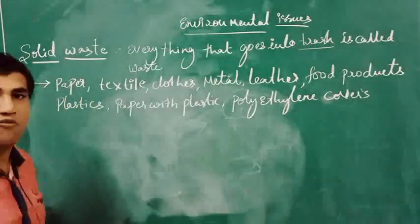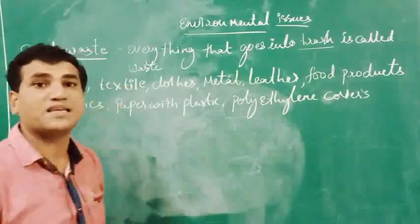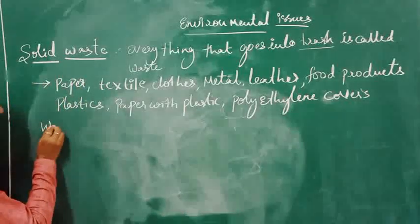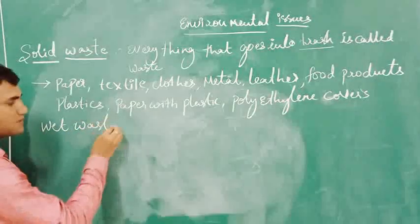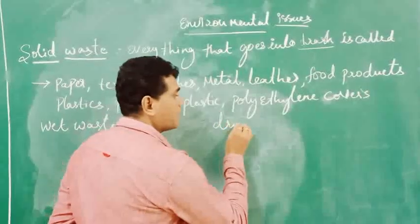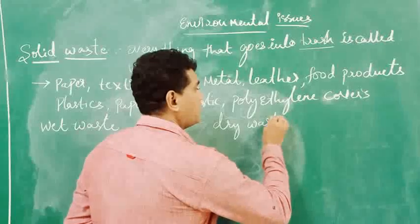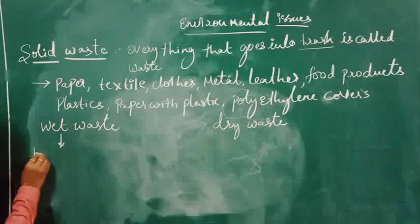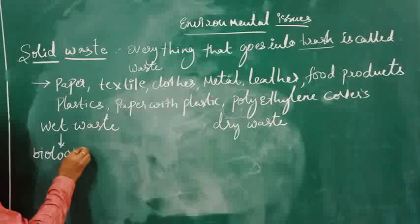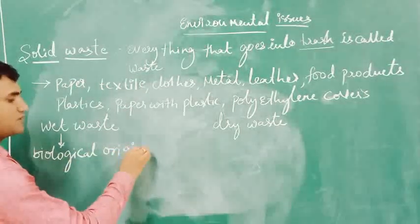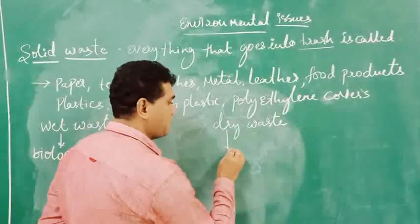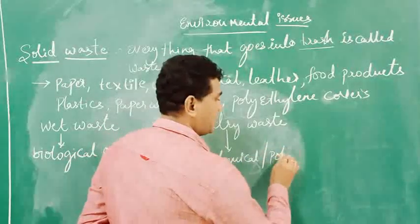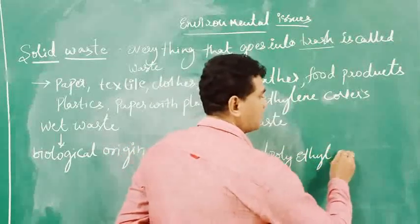Generally, whatever the number, it is basically divided into two things. One is called wet waste, one is called dry waste. Wet waste means biological origin. Dry waste means chemical or polyethylene waste.